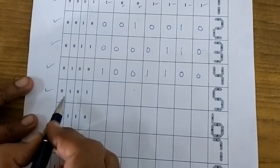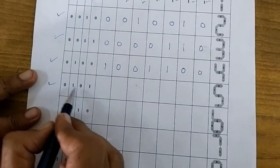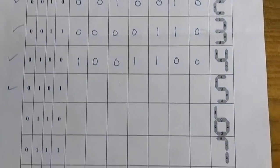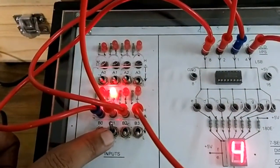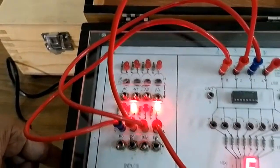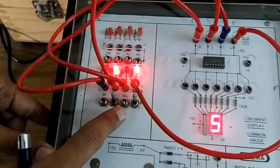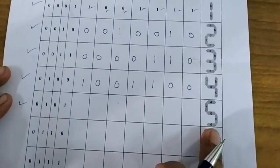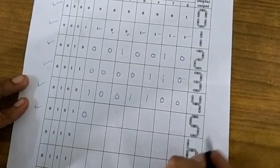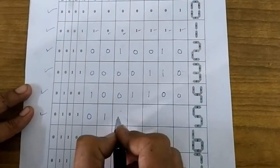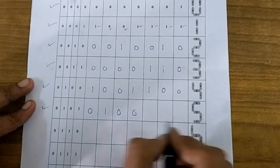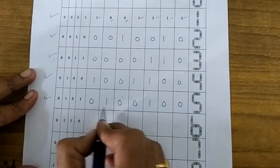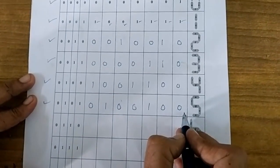The next input combination is 0 1 0 1, which corresponds to number 5. Applying 0, 1, 0, 1 to the switches displays digit 5. For digit 5, A is on (0), B is off (1), C is on (0), D is on (0), E is off (1), F is on (0), and G is on (0).